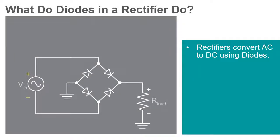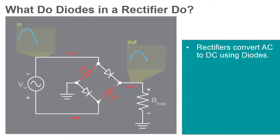Essentially, rectifiers convert alternating current, AC, to direct current, DC. They do this through the use of a component that only allows one-way flow of electrons. This is exactly what a diode does.